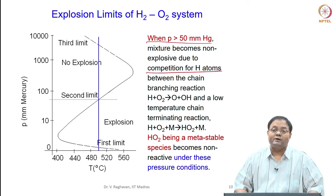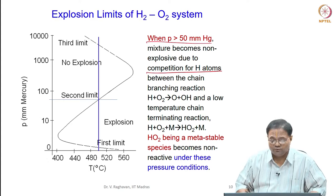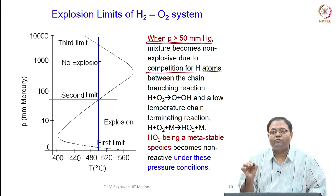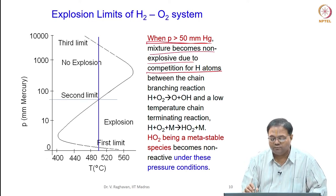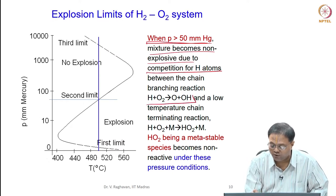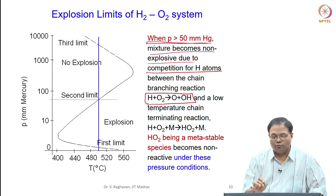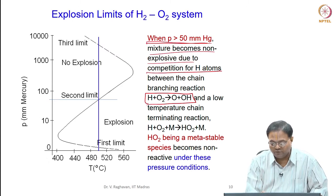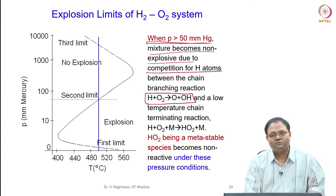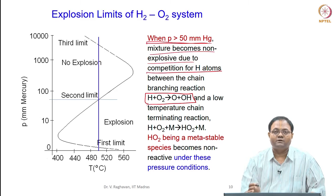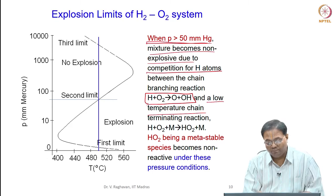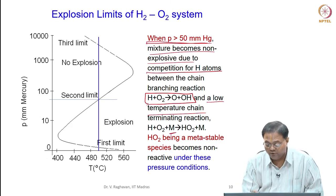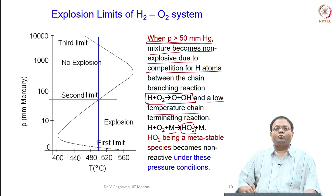When pressure is more than 50 mm mercury column, the mixture becomes non-explosive due to competition of H atoms between two reactions: the chain branching reaction H + O2 giving O + OH, and a low temperature chain terminating reaction H + O2 + a third body M giving HO2 + M. H is required for both reactions, so there is competition.